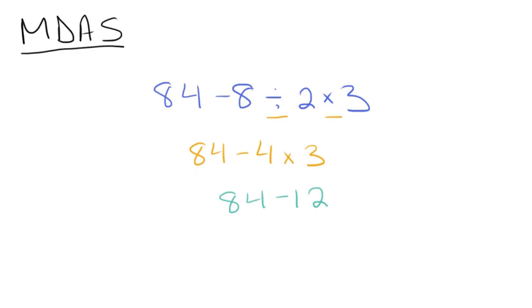Finally, perform any addition or subtraction. So we're going to subtract 12 from 84 and get 72. So this expression simplifies to 72.